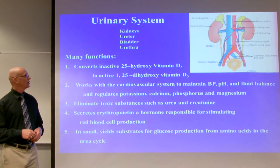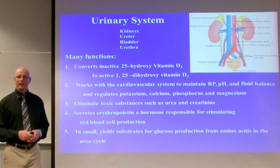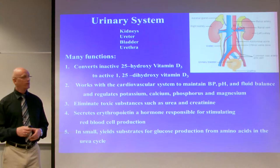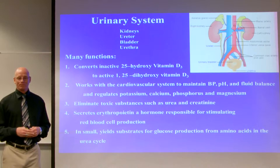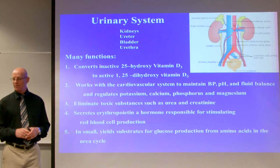The urinary system is composed of a kidney, ureter, bladder, and urethra. On top of the kidneys are the adrenal glands, which produce hormones — epinephrine and norepinephrine — released during the fight-or-flight sympathetic response to increase blood glucose for energy.